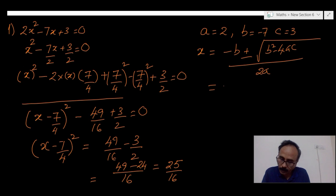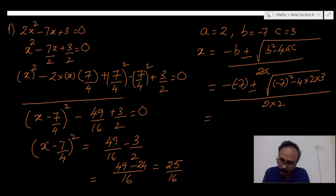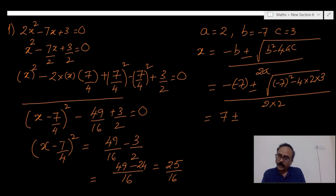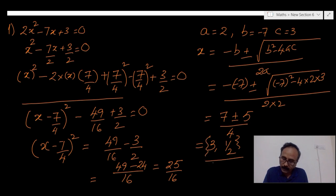Substituting: minus of minus 7 plus or minus square root of (minus 7)² minus 4 into 2 into 3, whole by 2 times 2. This gives us 7 — because minus times minus is plus — and within the root, 49 minus 24 equals 25. Square root of 25 is 5, denominator is 4. So 7 plus 5 by 4 is 12/4 which is 3, and 7 minus 5 by 4 is 2/4 which is 1/2. Here also we get the same solution set.